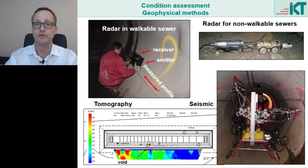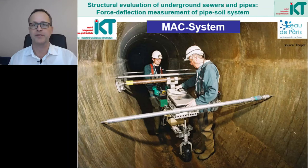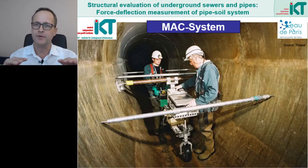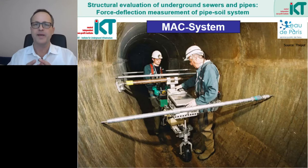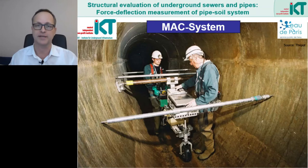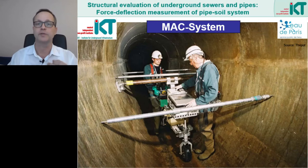A further mechanical measurement method is the MAC system — MAC stands for Mechanical Assessment of Conduits. In this method, the pipe is slightly pressed outwards with a pressure cylinder, without damaging the pipe, and the force-deformation relationship is measured. The deformation is recorded at the cylinder and at a certain distance in front of and behind it. The pipe stiffness and the soil stiffness can then be determined from this data. If we identify weaknesses in the system, we can assign them to the pipe or to the soil, facilitating the selection of suitable rehabilitation methods — for example, a grouting of the soil or a lining of the pipe.